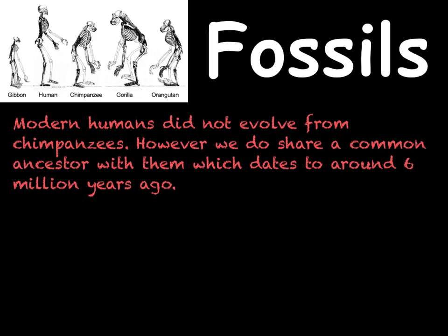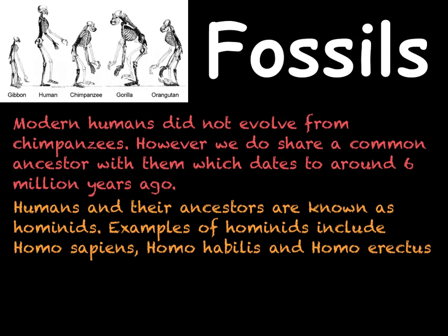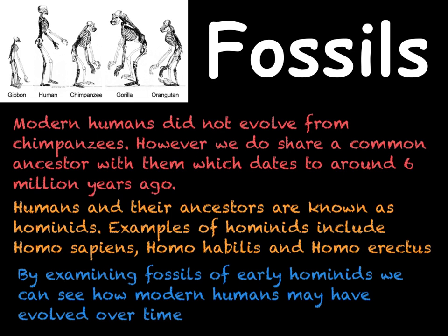Humans and their ancestors are known as hominids. Throughout history there have been various different hominids. We are Homo sapiens; there have also been Homo habilis and Homo erectus, amongst others. These ancestor hominid species have characteristics that are between those of apes and modern humans, and we can look at these hominid fossils to see how humans have evolved over time.